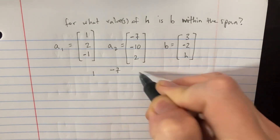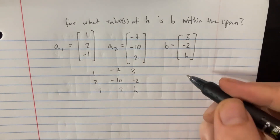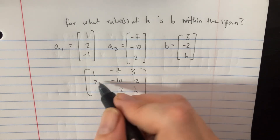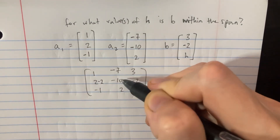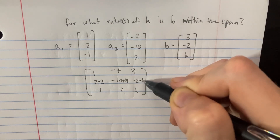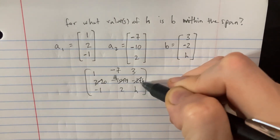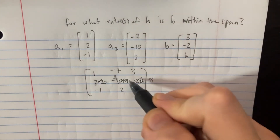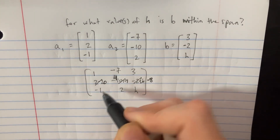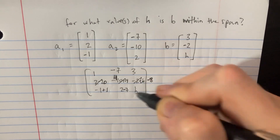We set up the augmented matrix with entries 1, negative 7, 3 | 2, negative 10, negative 2 | negative 1, 2, and h. We can subtract 2 from here, add 14 there, and subtract 6 from here, giving us 0. This will be a 4 and then negative 8. And then 0, 4, negative 8. Then here we do plus 1, minus 7, and plus 3.